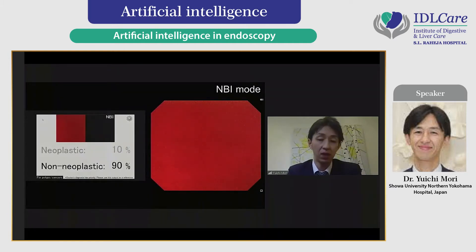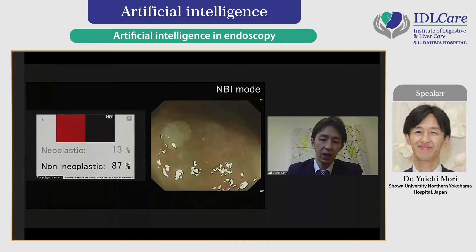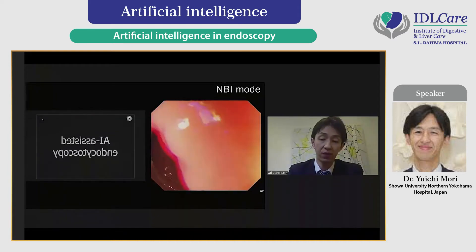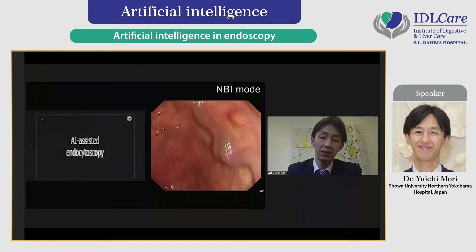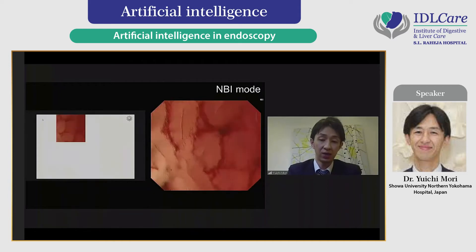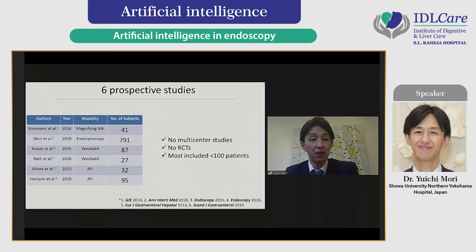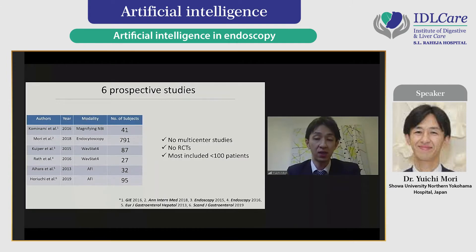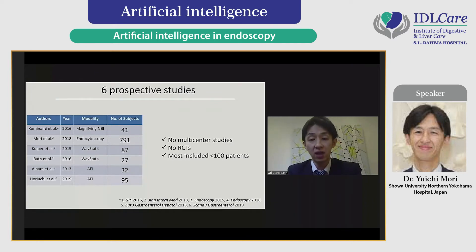This polyp is identified as non-neoplastic with the aid of AI. This technology is closely combined with endocytoscopy, as Professor Sano previously presented. With use of endocytoscopy data, you can get an immediate prediction of histopathology. Looking at the evidence for computer-aided diagnosis for polyp recognition, it's less attractive than that for computer-aided detection. There are only six prospective studies—no multicenter studies, no RCTs—and all but one included fewer than 100 patients. The evidence level is really low.